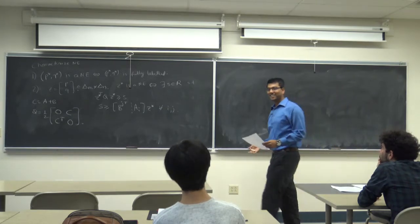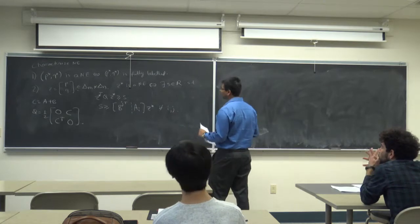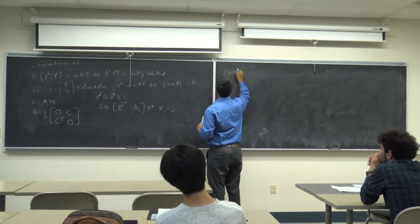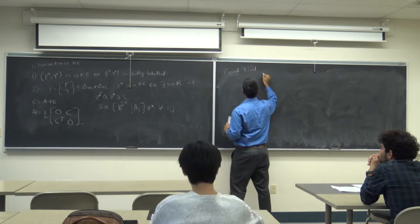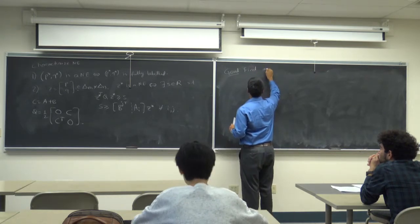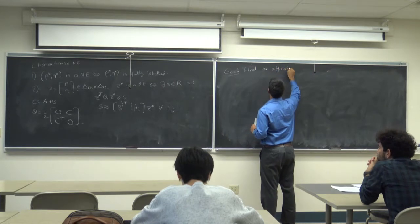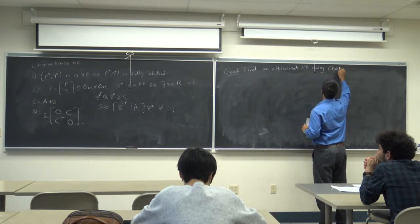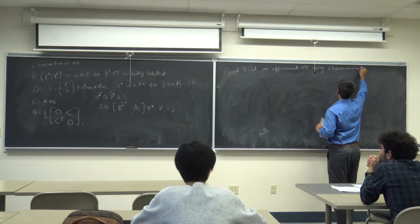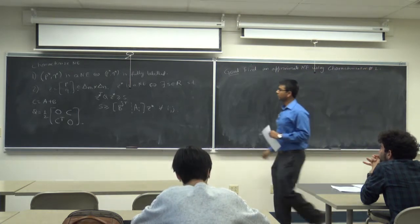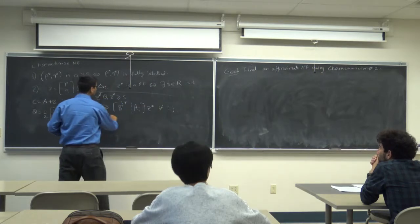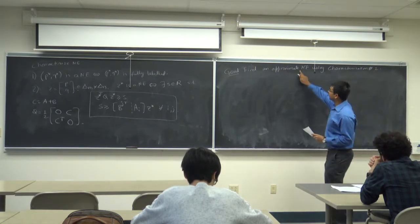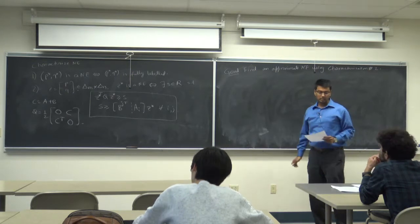Today is going to be more of an optimization lecture than a game theory lecture. The goal for today's class is to find an approximate Nash equilibrium using characterization number 2. We want to look at that equation closely and come up with an algorithm that can compute an approximate Nash equilibrium using that characterization.